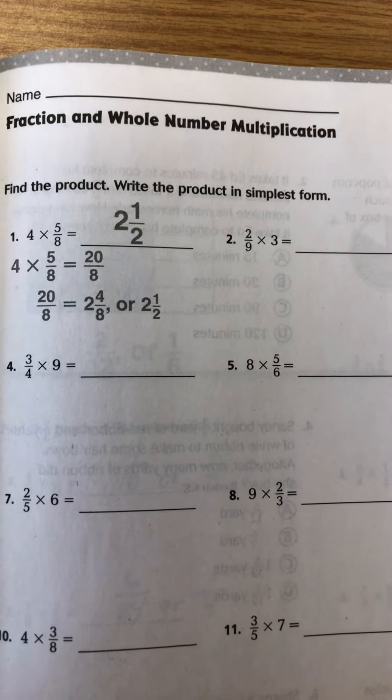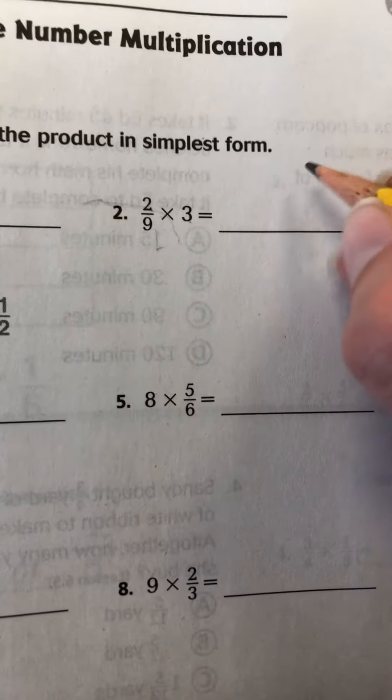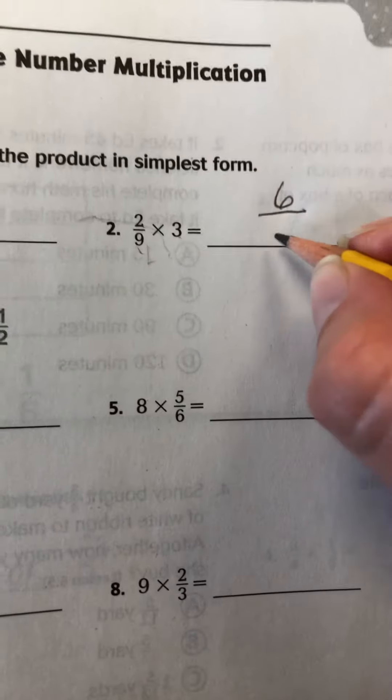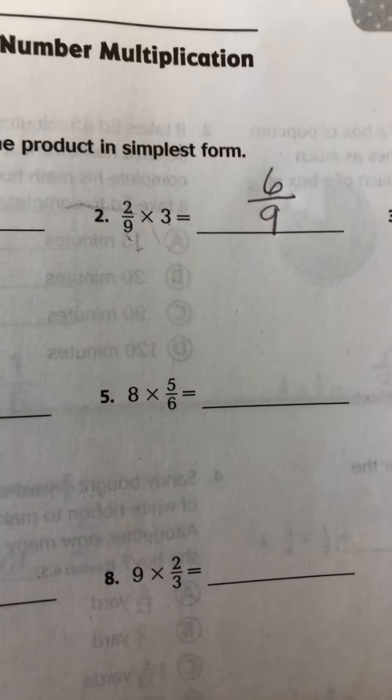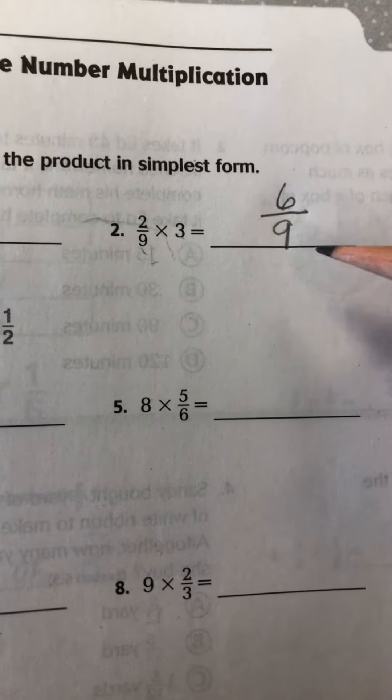You're really going to be multiplying the whole number times the numerator. So 3 times 2 is 6, and then your denominator is going to stay the same. So your answer is 6 ninths. They do not need to simplify in fifth grade, so we're going to leave it as 6 ninths.